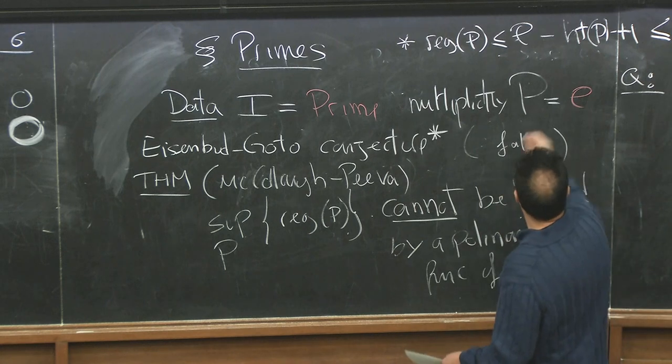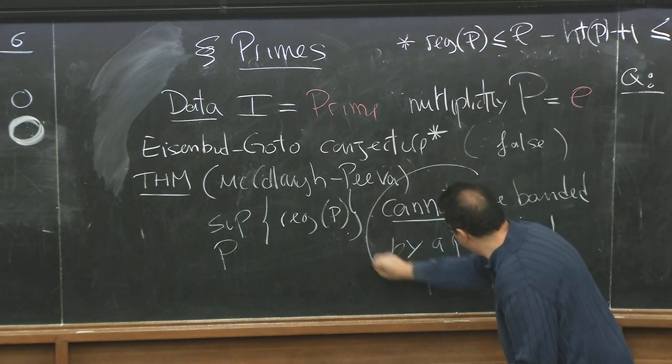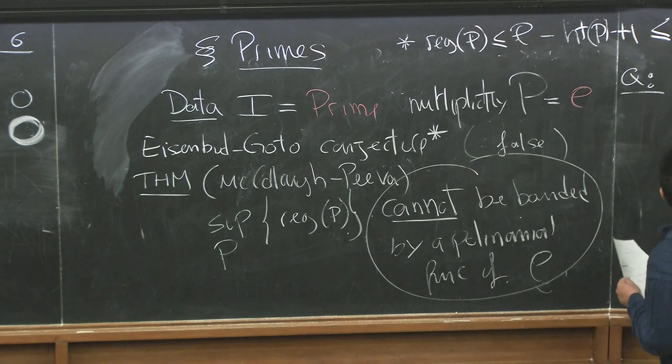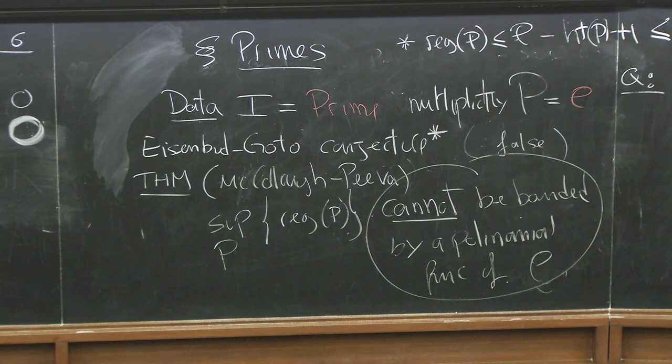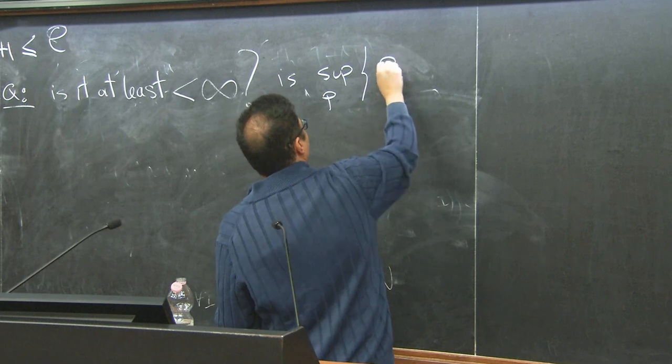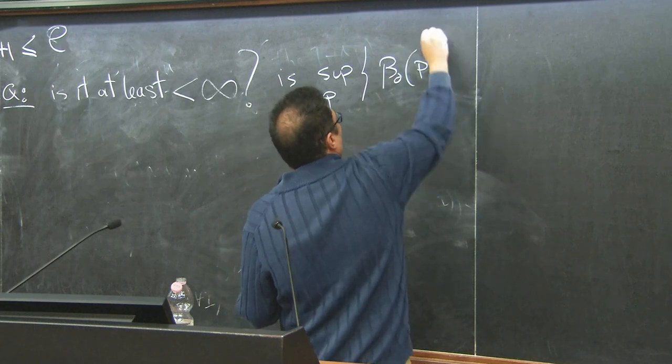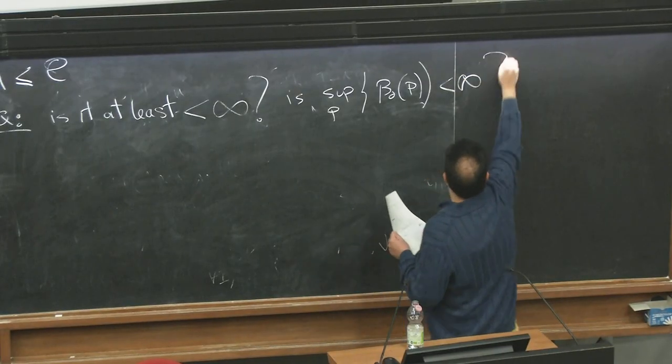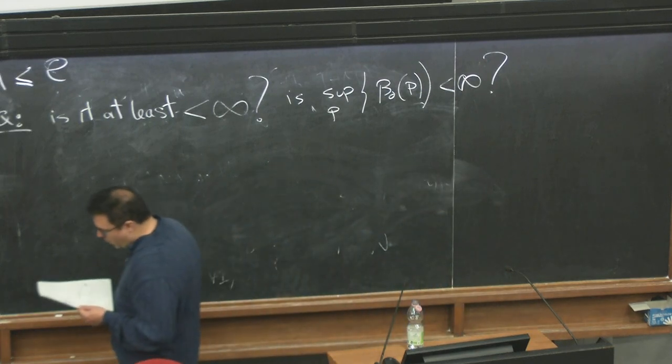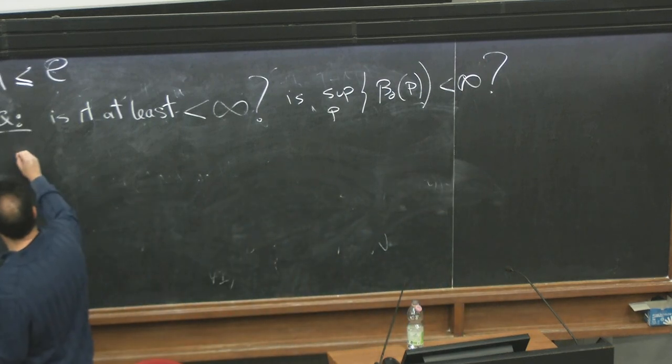This bound cannot be bounded. So question: is it at least finite? Is there a bound? Or perhaps I can look at generators. Is the supremum over the primes of the number of generators, B_0 of P, finite? The answer to both questions is basically positive.